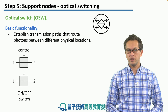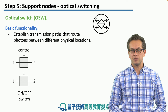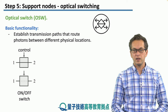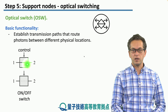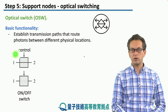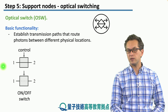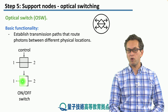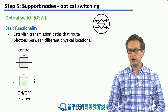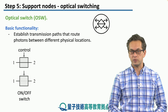For example, here we've got a very simple — the most simple switch in fact. It's got one input port and one output port and it's got a control. This control determines whether the photon passes through or it gets blocked by the switch. This is known as an on-off switch.